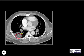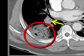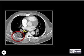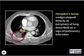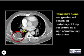What is the name of that density associated with what the yellow arrow is pointing to? That's a Hampton's hump, a wedge-shaped density at the periphery of the lung, described as a sign of pulmonary infarction. The yellow arrow is pointing to a thrombus.